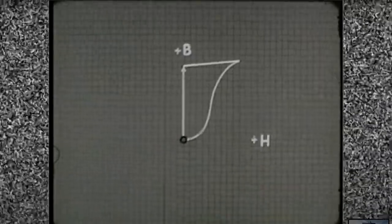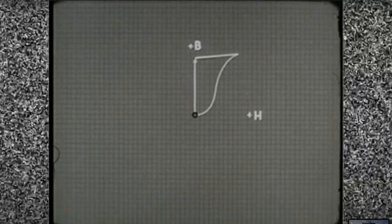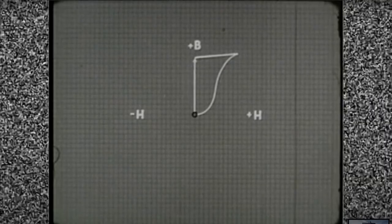To plot the effect, we'll extend our graph. With dot current, we're applying a negative magnetizing force represented by minus H.